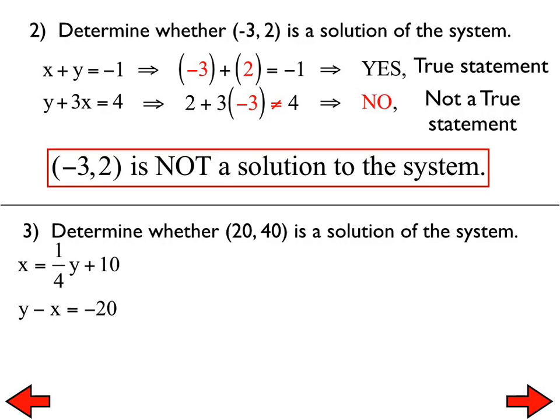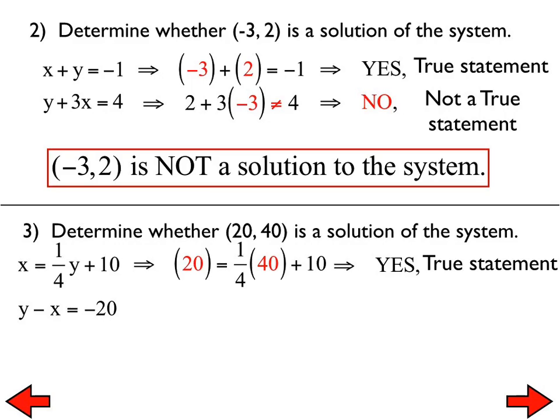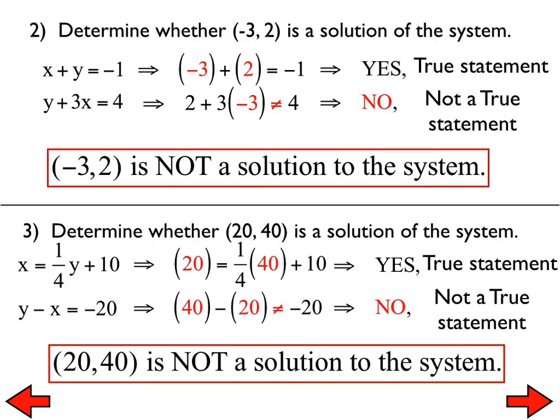Number 3: 20 comma 40 is not a solution to the system. It is a solution for the first equation but not for the second one. And reality is, if it did not make a true statement in the very first equation, you could stop right there because it would not make a true statement in both of them. So 20 comma 40 is not a solution to the system.